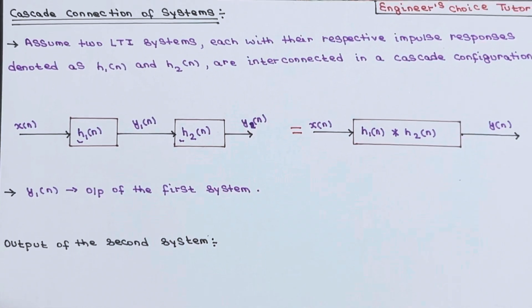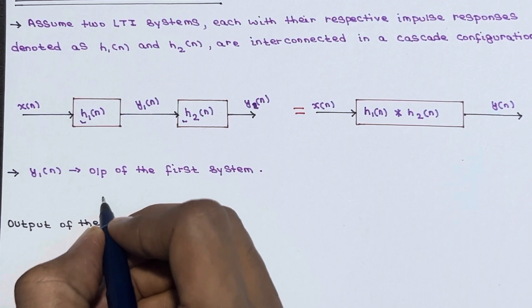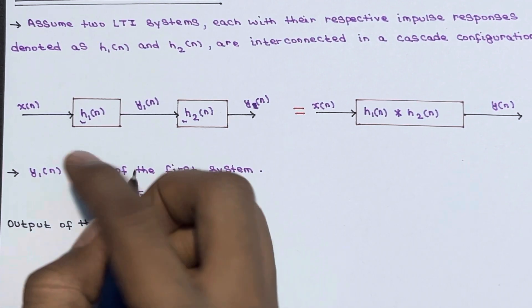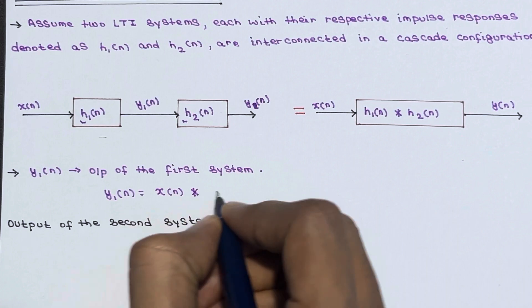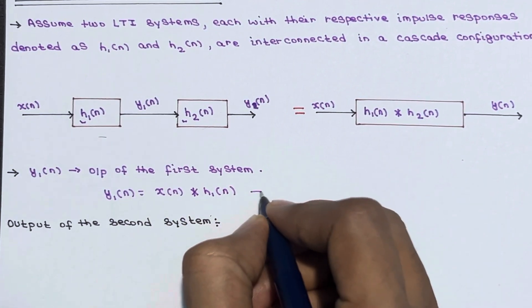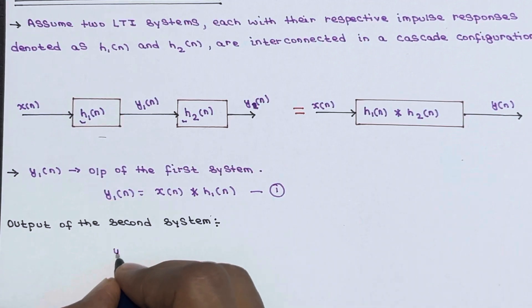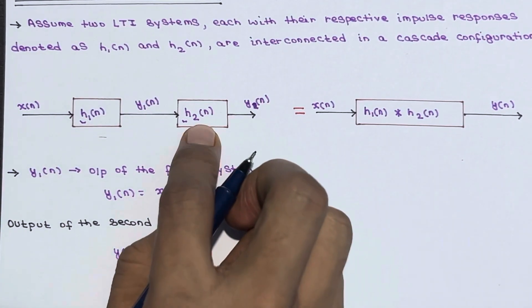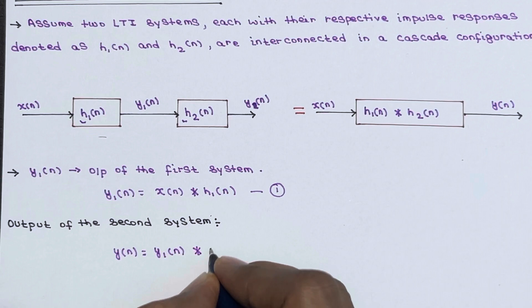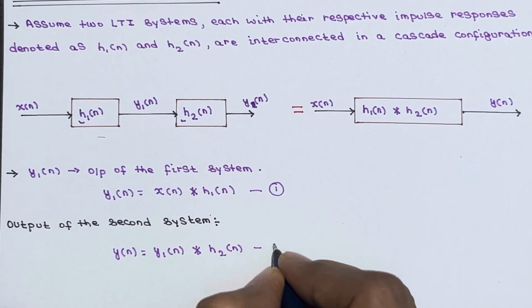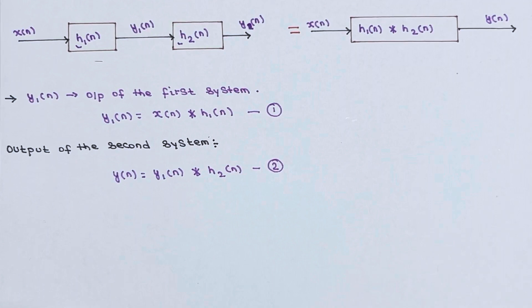Now let's verify this. y1(n) is the output of the first system, so it can be written as the convolution of x(n) with h1(n) — call this equation one. Similarly, the output of the second system, y(n), is equal to the convolution of y1(n) and h2(n) — call this equation two.